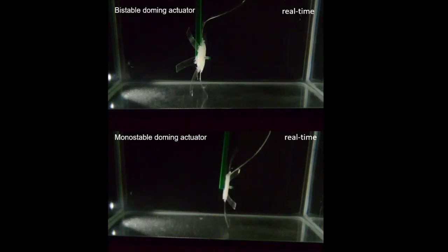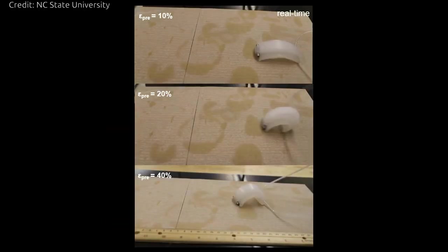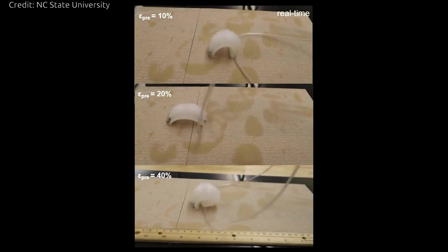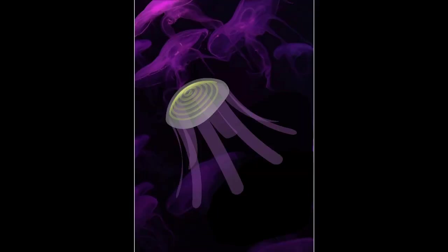That still utilized the concept of switching between two stable states in order to make the soft robot move more powerfully and more quickly. And one of the animals they were inspired by was the jellyfish.